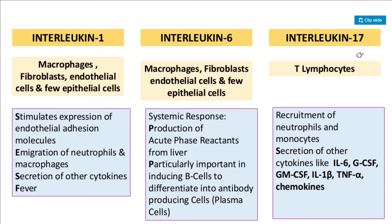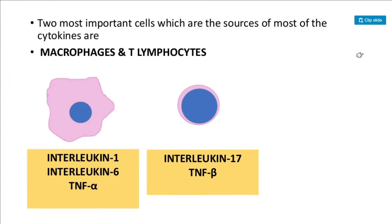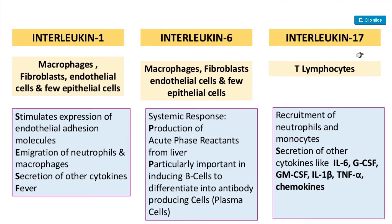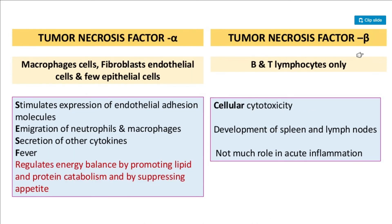Interleukin-17 is produced by T lymphocytes. Its role is the recruitment of neutrophils and monocytes. When secreted from T lymphocytes, IL-17 is also responsible for stimulating secretion of other cytokines such as IL-6, G-CSF, various colony stimulating factors, IL-1 beta, TNF-alpha, and chemokines.